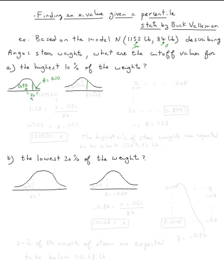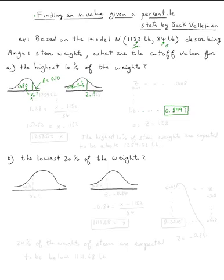So this is the z value I'm looking for on the table, and this area is ninety percent, which means 0.90. If you go to the normal table, you're going to go backwards — look at the middle of the page where z is positive, because it's the 90th percentile, so it's above the mean. The closest value you'll find is 0.8997, corresponding to z = 1.28.